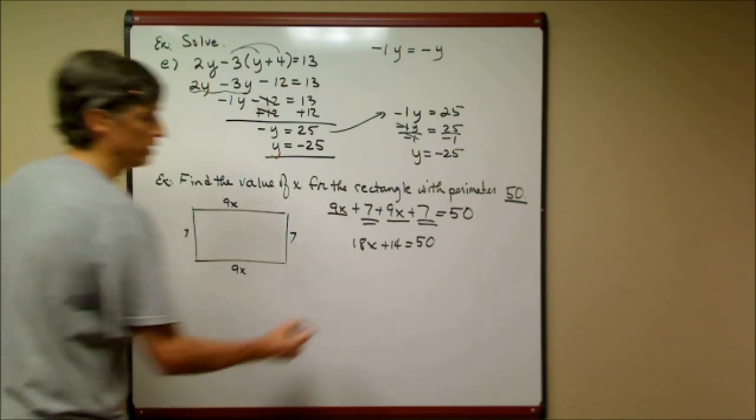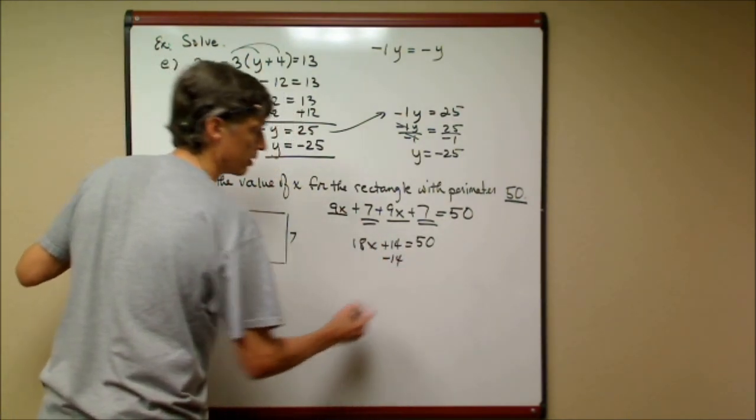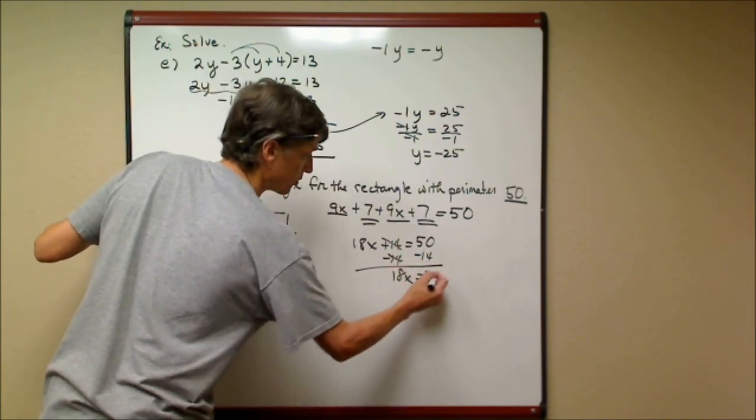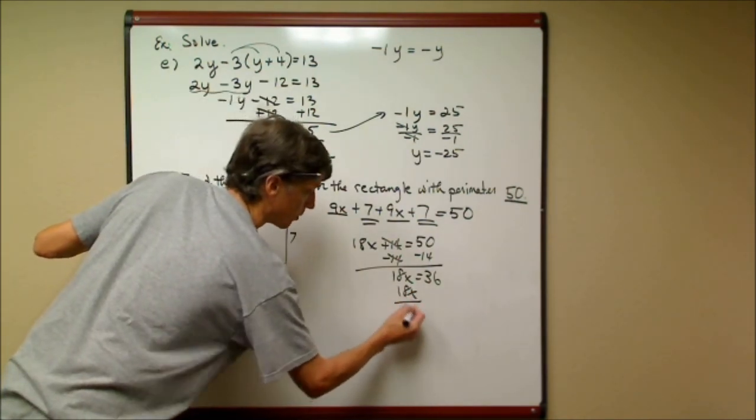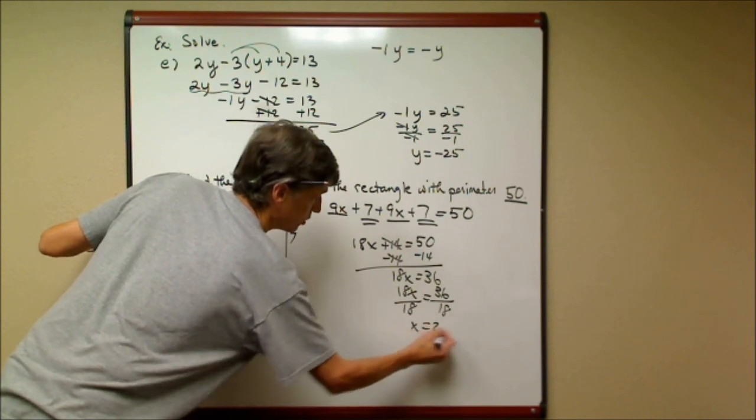Now it's an easy two-step equation. Undo what's around it here. I'm going to undo the adding. Before I undo it, I'm going to multiply, and I'm going to subtract 14 from both sides. 18x equals 36, and then I'm going to divide both sides by the number times the variable. I'm going to divide both sides by 18, and I get x is equal to 2, and that's our answer.